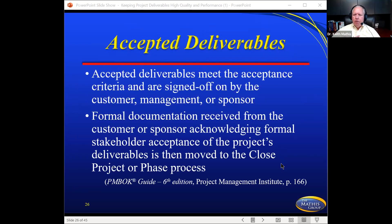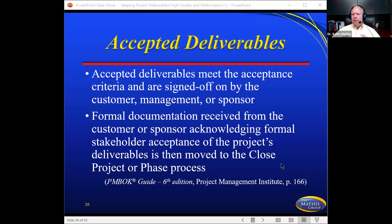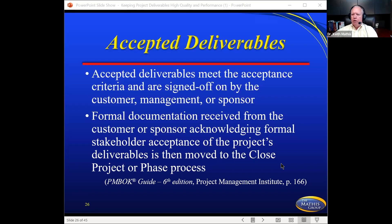Many organizations have accepted deliverables — when working with a vendor, acceptance is usually a pay point. Accepted deliverables meet the acceptance criteria, are signed off by the customer, management, or sponsor, and formal documentation acknowledges stakeholder acceptance. That deliverable is then moved to the closed project or phase process. If a vendor completed it, acceptance triggers a payment to them.